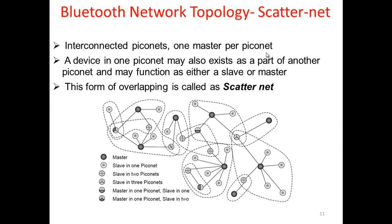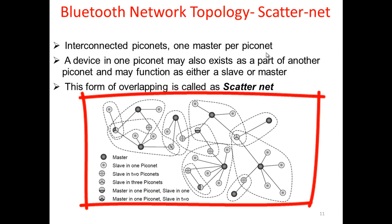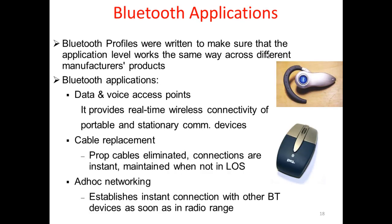Another topology used in Bluetooth is the scatternet. A scatternet is an interconnected set of piconets with one master per piconet. A device in one piconet may also exist as part of another piconet and may function as either slave or master. This form of overlapping is called a scatternet, where many piconets are interconnected but each piconet has only one master.